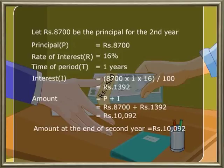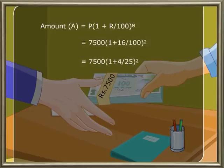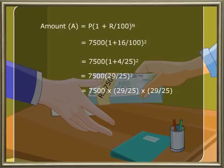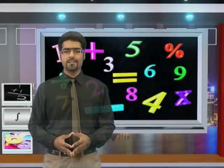We can also solve this problem using the formula: the amount A is equal to P into 1 plus R by 100 whole to the power N. Substituting the numbers: 7500 into 1 plus 16 by 100 whole to the power 2, because there are two years. So 7500 into 29 by 25 whole square, which gives 12 into 29 into 29, therefore the amount is 10092. Hence the amount to be paid by Ramaya at the end of two years to clear the loan is rupees 10092.